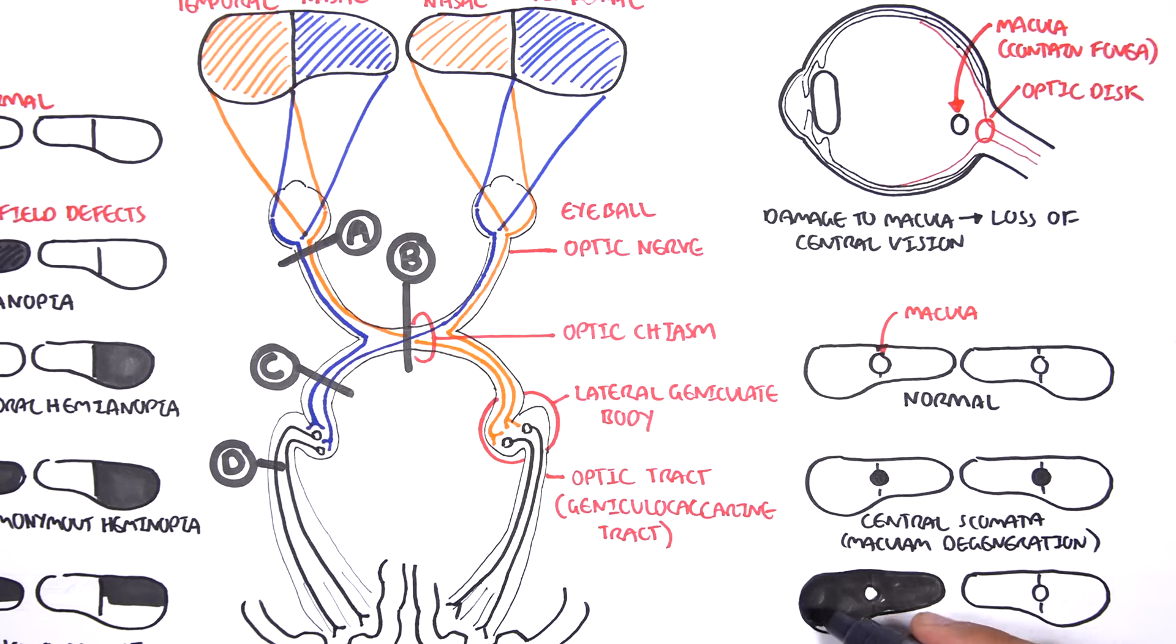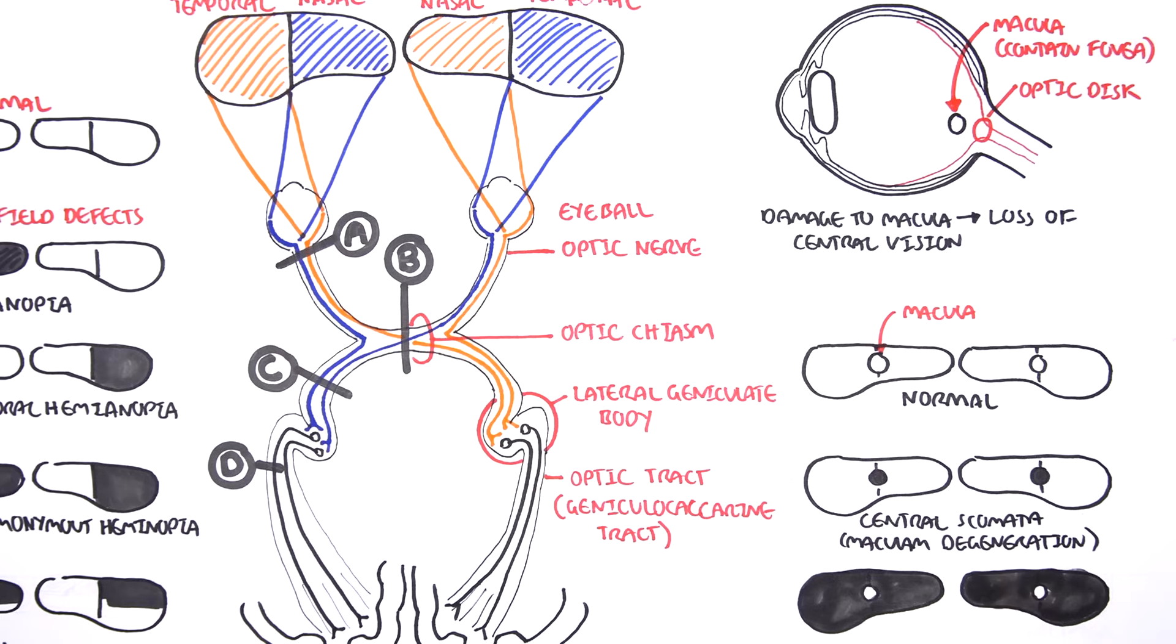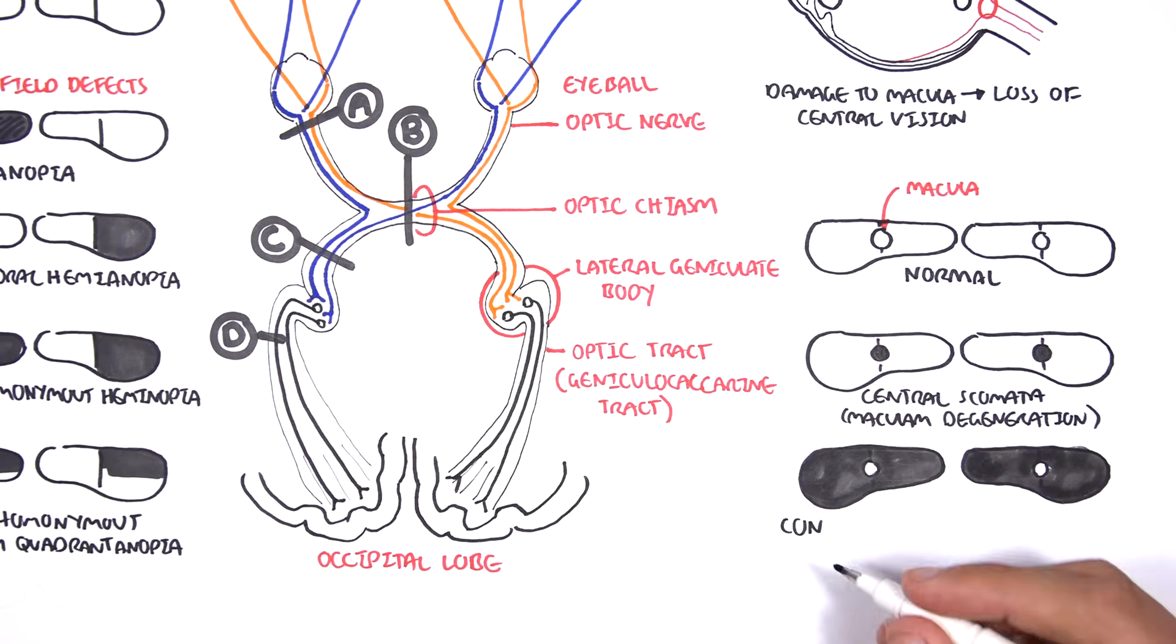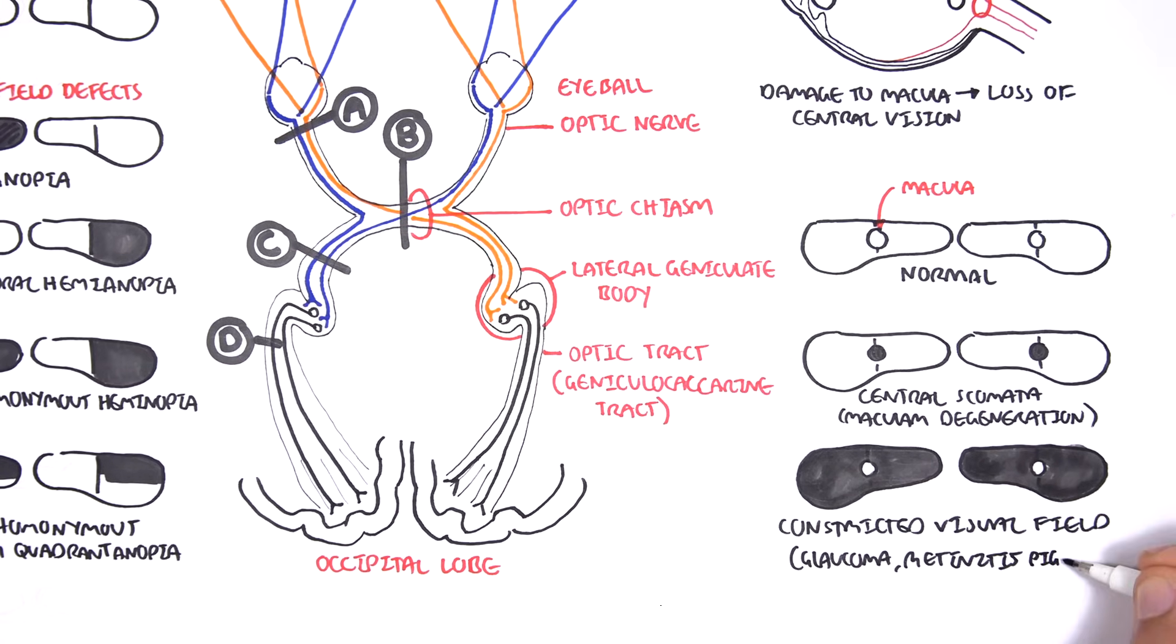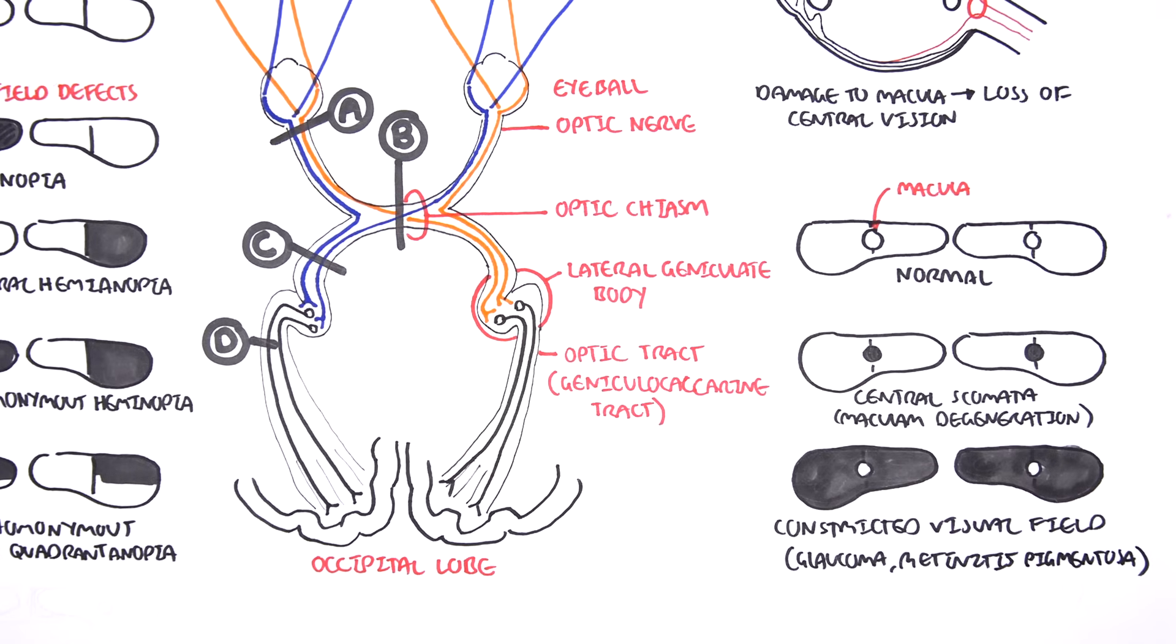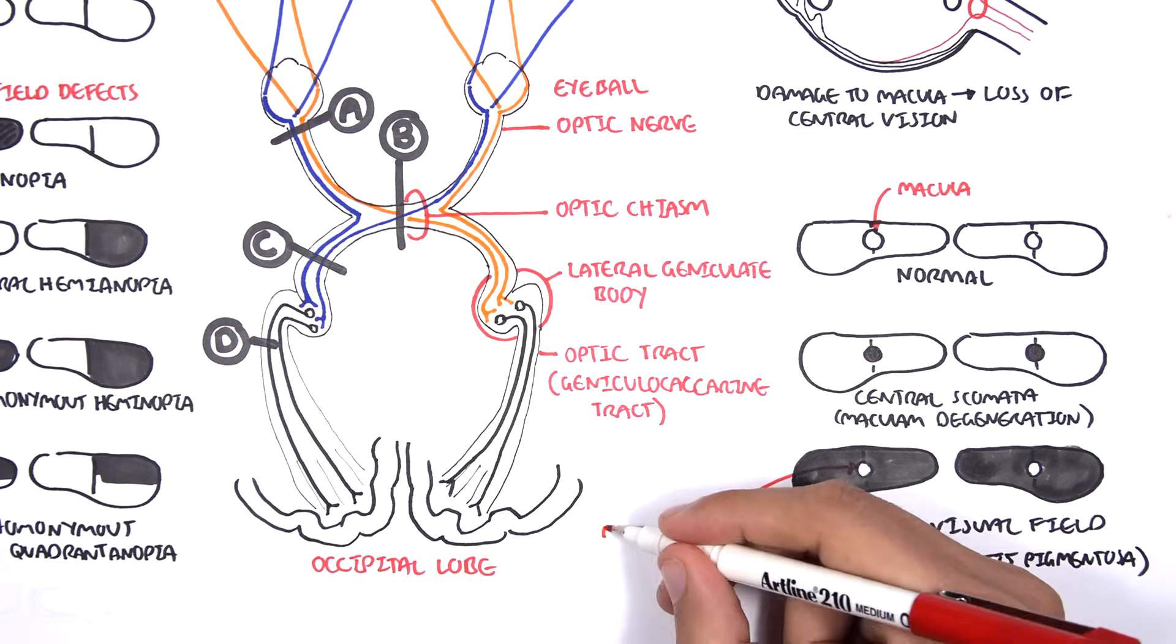If everything else is lost but the macula is preserved, this is called constricted visual fields. This is what we see in glaucoma and retinal pigmentosa. The macula is spared, as a result the patient has tunnel vision.